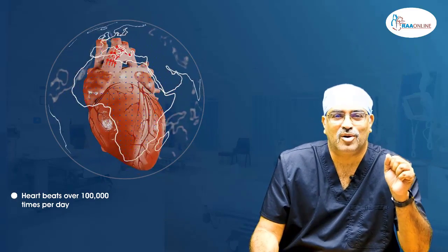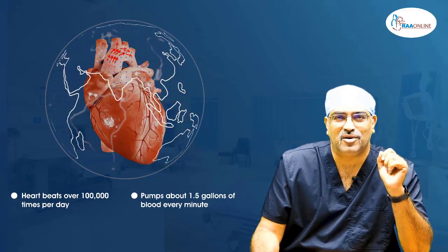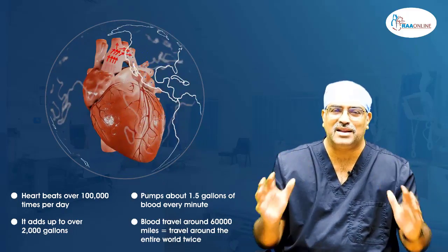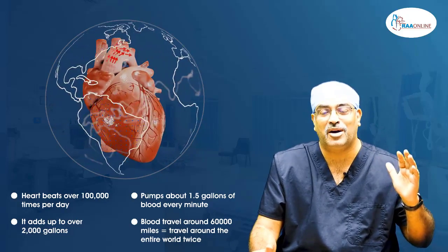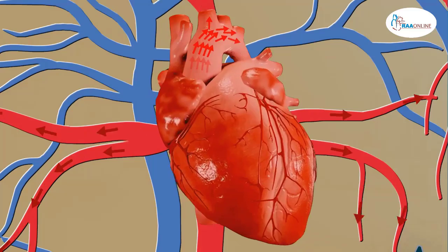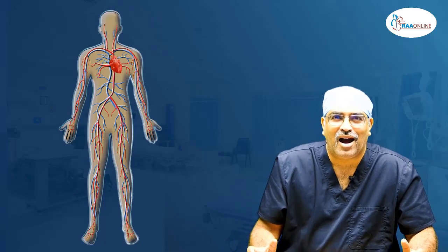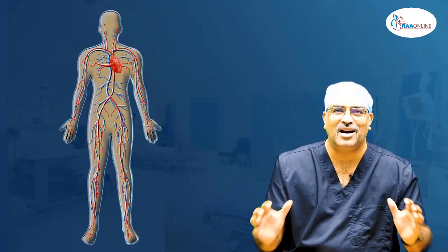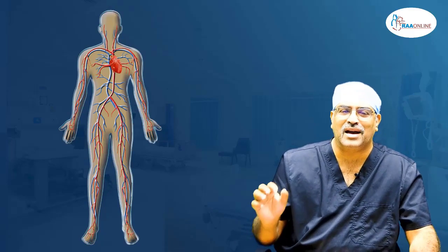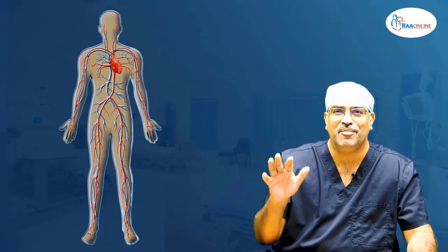Look at these statistics. The heart normally beats about 1 lakh times per day and it pumps about 1.5 gallons of blood every minute. Over a period of 24 hours, this adds up to 2,000 gallons. This blood pumped by the heart travels about 60,000 miles of blood vessels in the body — enough to travel the world twice. Not even a single part of the human body can function without receiving blood from the heart. The heart is just the size of a closed fist, making it a unique organ whose anatomical and physiological knowledge is imperative for any medical physician.